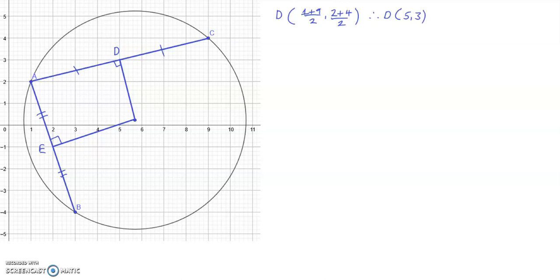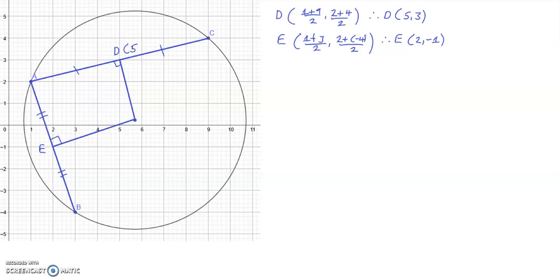And I am going to do similarly for E, which is the midpoint of AB. Therefore, E has the coordinates (2, -1). So I am going to put these coordinates on the graph now. So D is at (5, 3) and E is at (2, -1).